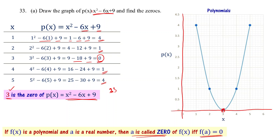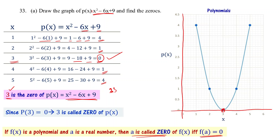We already showed that p(3) = 0. That's why we can say that since p(3) is zero, 3 is called the zero of p(x). Understood.